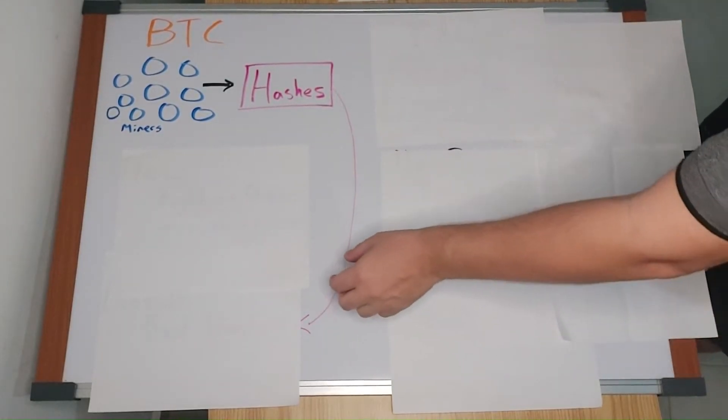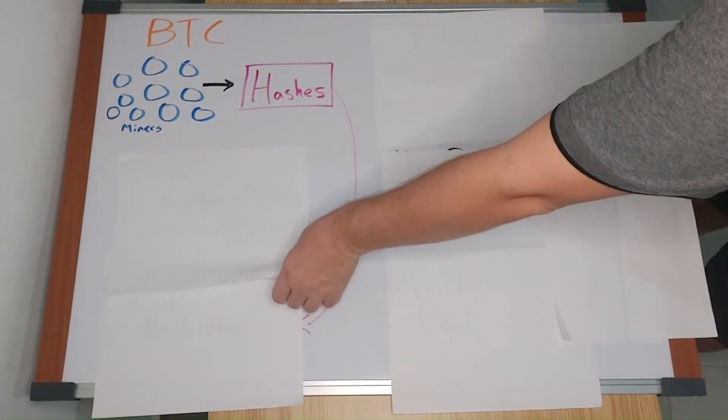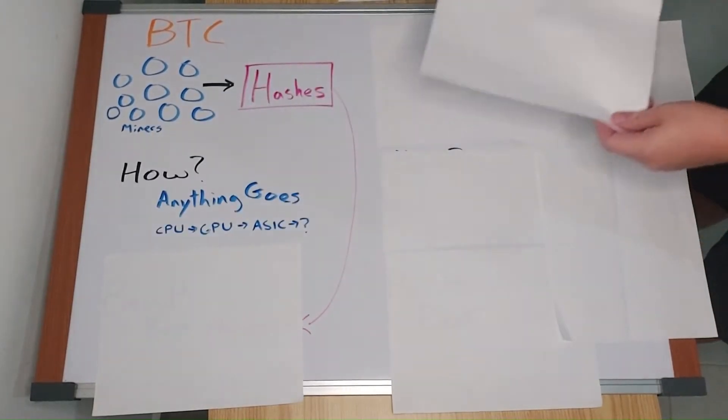Well, over time, mining was first done on CPUs, then GPUs, now ASICs. But really, anything goes. There are no rules.